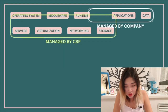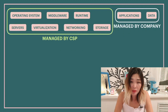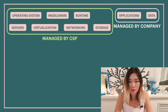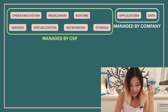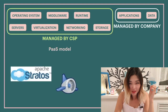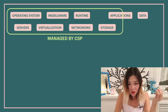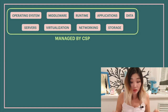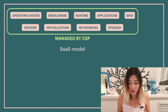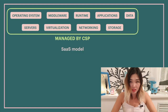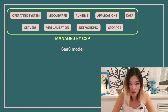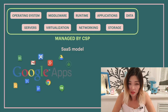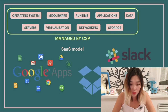In a platform as a service model, the company only manages the applications and data, while all other components of the infrastructure are managed by the cloud service provider. In a software as a service model, all components are managed by the cloud service provider and the company is just the end user of the services and does not do any processing on their site. Some examples of SaaS providers include Google Apps, Slack, Dropbox, and Office 365.